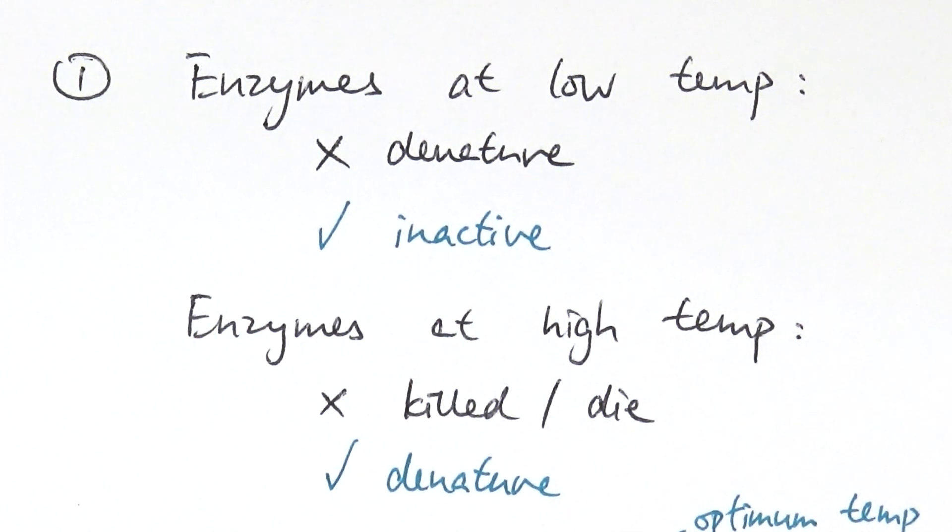When the enzyme is at a low temperature, don't say that they have denatured because they haven't. Denatured by definition means the loss of active site because it's so hot or whatever reason that it causes the active site to change its shape. That by definition is denatured, but it must be caused by either high kinetic energy because of a high temperature or a change in pH.